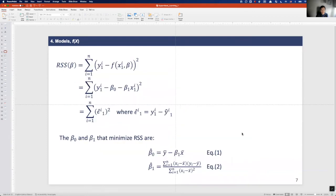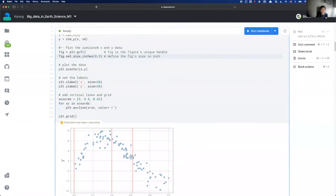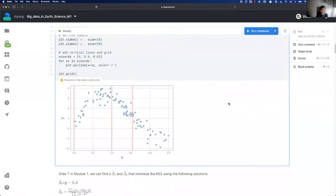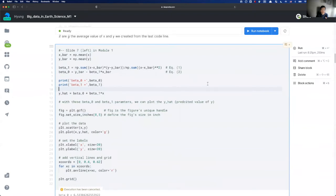So let me go back to the DimNote. This code block here shows how we can get these two parameters for the simple regression model. Please go through these code lines and make sure you understand these equations. They will help you to understand how machine learning algorithms work in the future.